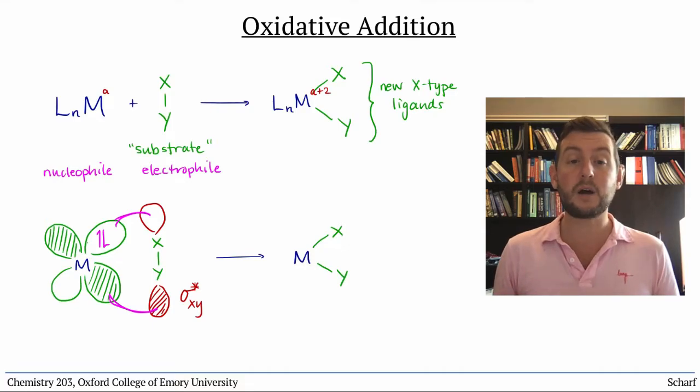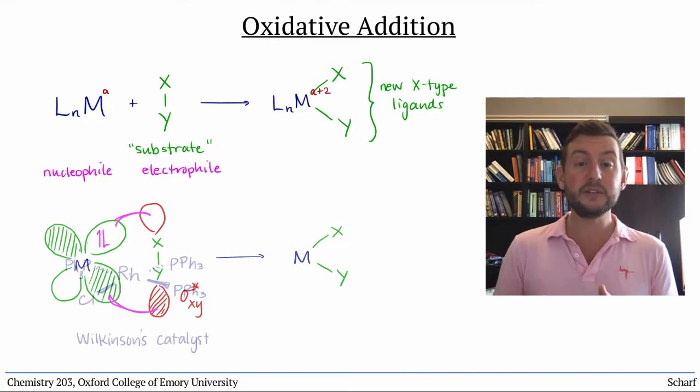All sorts of compounds can be substrates for this reaction, and importantly they do not necessarily have to have low energy LUMOs.